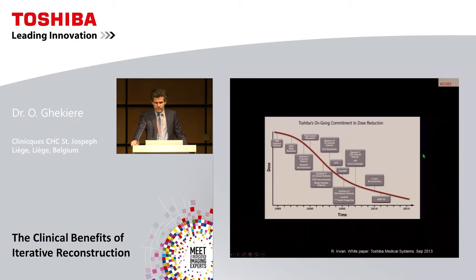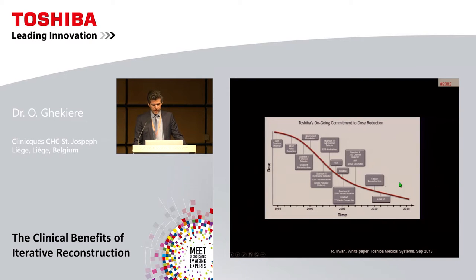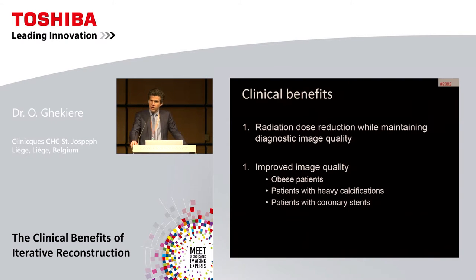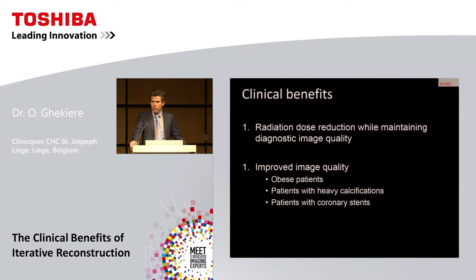This slide shows the evolution of Toshiba's commitment to reduce radiation dose with iterative reconstruction, including the FIRST and AIDR 3D, the latest clinically implemented dose-reduction modalities. The main purpose of iterative reconstruction is the overall reduction of radiation dose while maintaining the same image quality, and this has been particularly important in the field of cardiac CT.